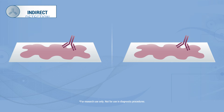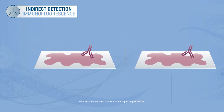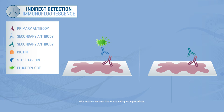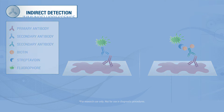Indirect immunofluorescent detection can be performed with a secondary antibody conjugated with a fluorophore, or with a biotin-conjugated secondary antibody followed by a streptavidin-linked antibody bound with a fluorophore.